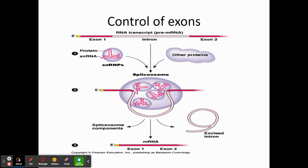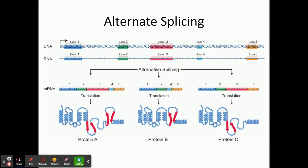Going back to splicing — eukaryotes have multiple exons within a gene, and we need to get rid of the introns. Exons can be put together in different ways. Introns are removed by a structure called a spliceosome, made up of SNRPs and other proteins. We can assemble those exons in different ways to make different types of proteins. The figure shows different exons being spliced together, leading to three different protein shapes. On average, a gene codes for three to four different proteins through alternate splicing.